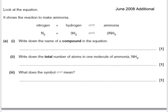Here's a past paper question. Look at the equation. It shows the reaction to make ammonia. Write down the name of a compound in the equation. Well here a compound is not an element. A compound is made up of two or more elements chemically combined together. The only compound here is the ammonia. It's made of nitrogen and hydrogen atoms joined together chemically.